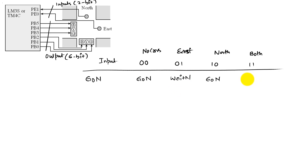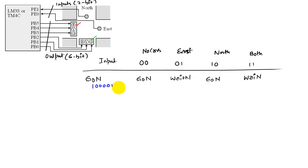If there is traffic in both directions, I'll do the same thing since I've already given access to the north, so I'm going to wait in the north direction. The output I should produce when in go north has to correspond to a red light in the east and a green in the north direction. So we produce an output of 1, 0, 0, 0, 0, 1, and we've handled our first state.